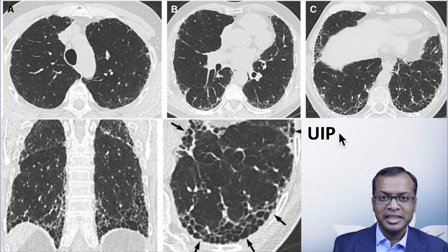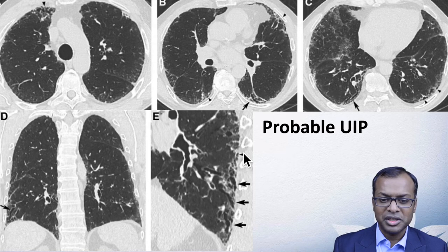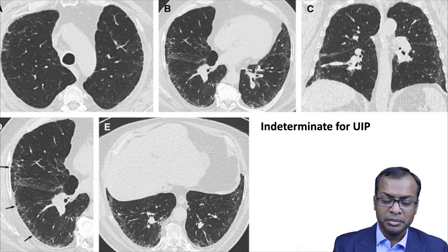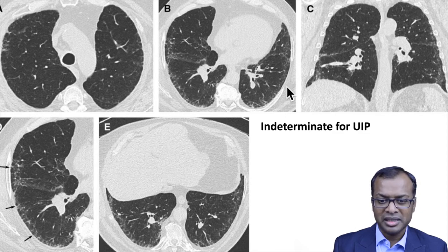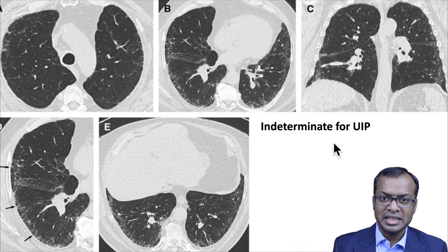Here is an example of a typical UIP pattern — subpleural disease, honeycombing, and an apicobasal gradient with little ground glass opacity. This next patient has very similar features but no honeycombing in the lung bases, consistent with probable UIP. A third patient shows subpleural reticular changes with patchy areas of ground glass opacity, not much traction dilatation of bronchi, and no honeycombing, though some apicobasal gradient is present — this is classified as indeterminate for UIP.